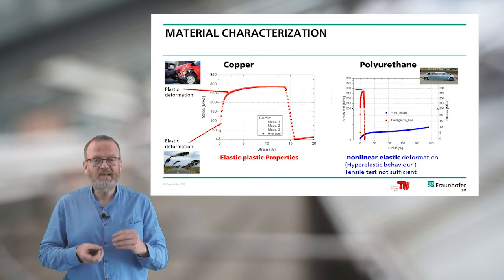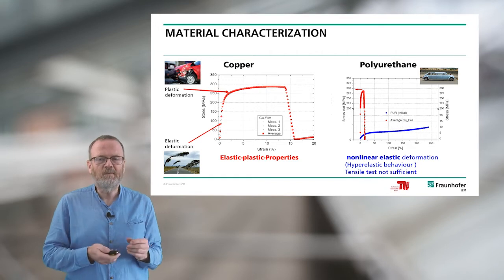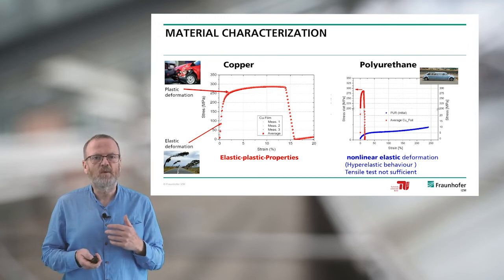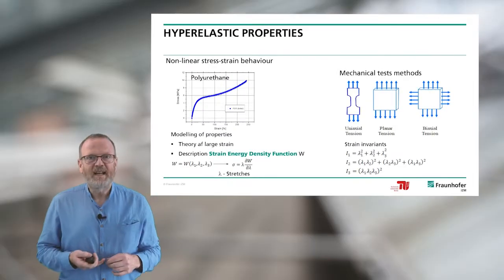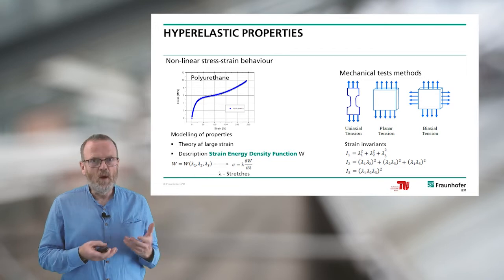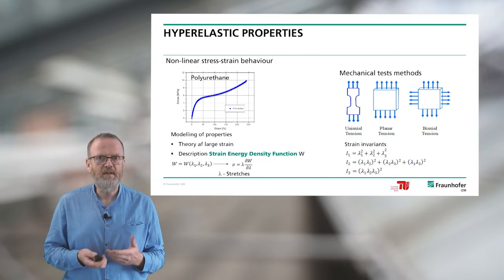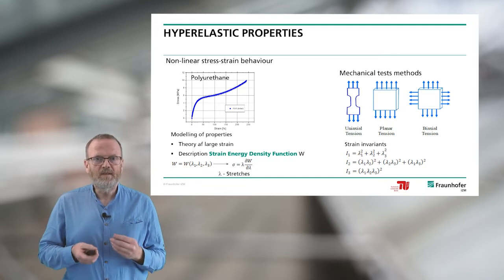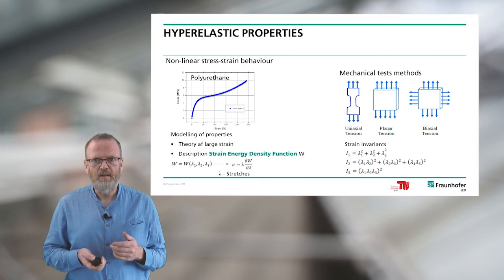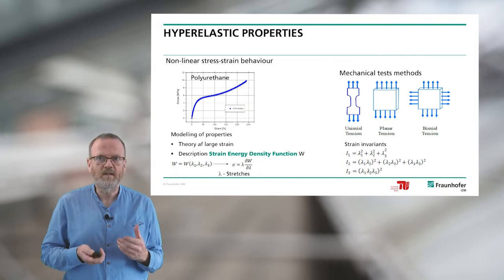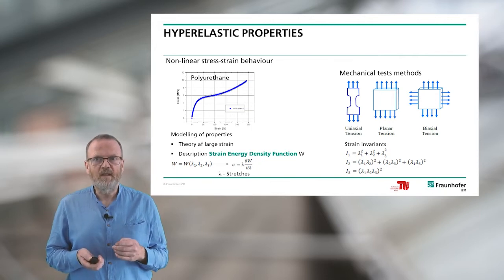This is the challenge: to analyze the combination of polyurethane and copper for lifetime modeling. The question is how to determine the hyper-elastic behavior. The tensile test alone is not sufficient to analyze all material properties. For analyzing the hyper-elastic properties — the non-linear stress-strain behavior of polyurethane — we describe this material by means of the strain energy density function W, and we analyze the different parameters including the strain invariants E1, E2, and E3.